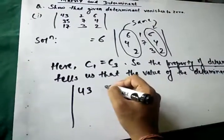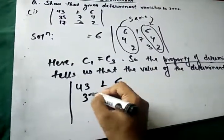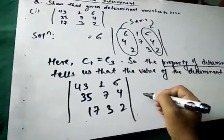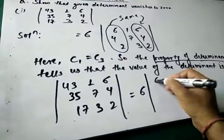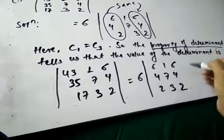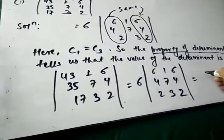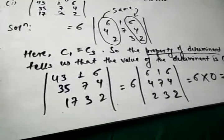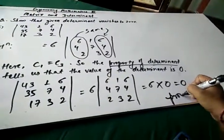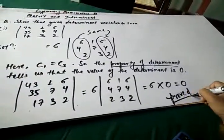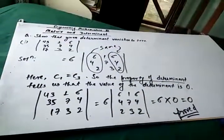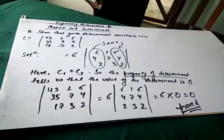So the original determinant 43, 1, 6 / 35, 7, 4 / 17, 3, 2 equals 6 times the determinant of 6, 1, 6 / 4, 7, 4 / 2, 3, 2, which equals zero. Hence we have proved that this determinant vanishes to zero. Thanks for watching — please don't forget to subscribe.